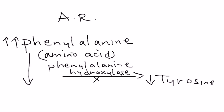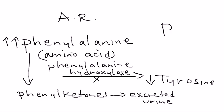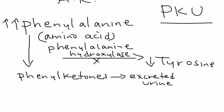When phenylalanine reaches very high levels, it produces a high level of breakdown products or metabolites. One of these is phenylketones, which are excreted in the urine — which is exactly why the disease is called phenylketonuria, or PKU.